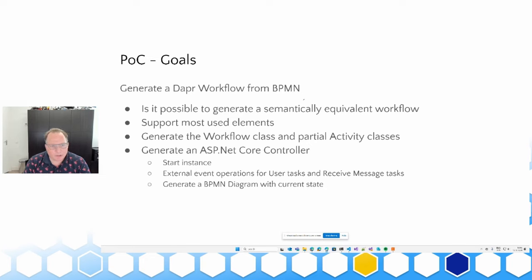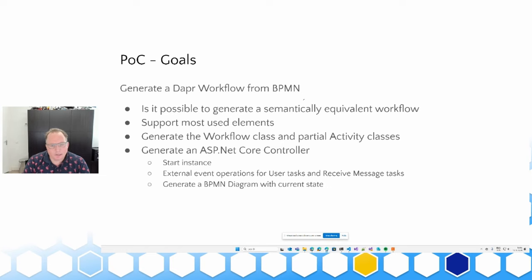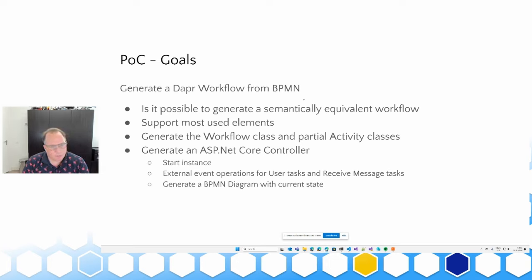What the generator should do is take the BPMN diagram, generate a Dapper workflow class, and also generate partial activity classes for the service tasks within the BPMN workflow. Those are empty partial classes that later can be used to implement actual functionality. Besides that, you also need some way of starting the workflow and sending events to it. It would be nice to also generate an ASP.NET Core controller for that purpose — to start the instance, send external events for user tasks or receive message tasks, and maybe even generate a diagram of the current workflow state.